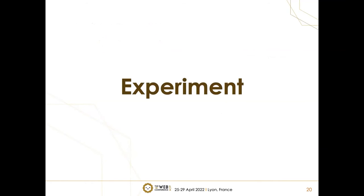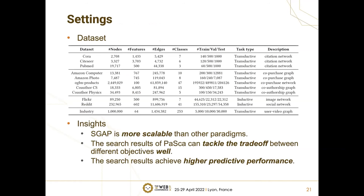Now let's look at the performance of the proposed SGAP and PASCA system. Our experiments include datasets of different sizes: 10 public datasets and an industrial dataset from Tencent, with node counts ranging from 2,000 to 2.4 million. We investigate three insights: first, SGAP is more scalable than other paradigms; second, PASCA's search results tackle the trade-off between different objectives well; and third, the search results achieve higher predictive performance.